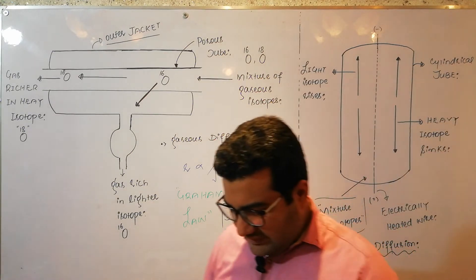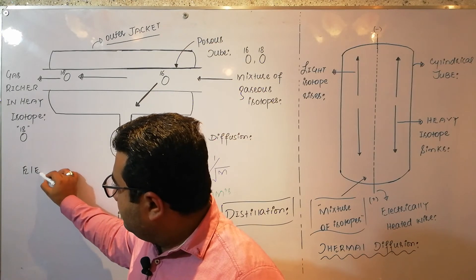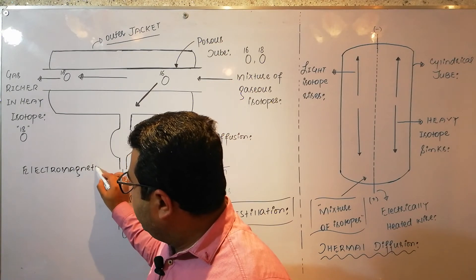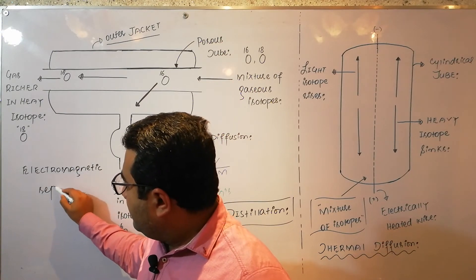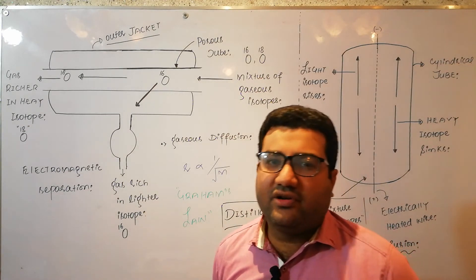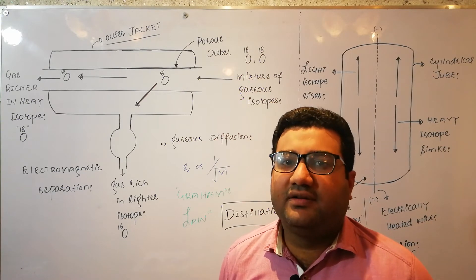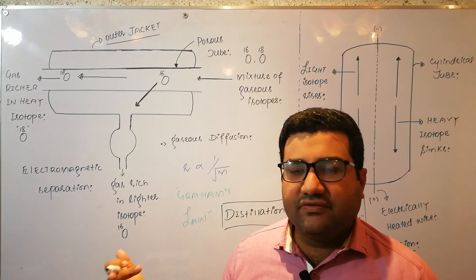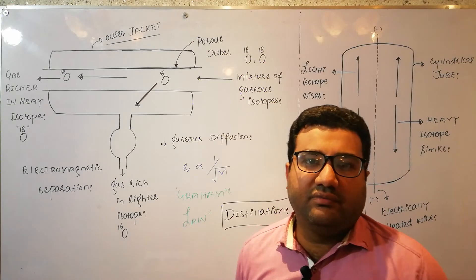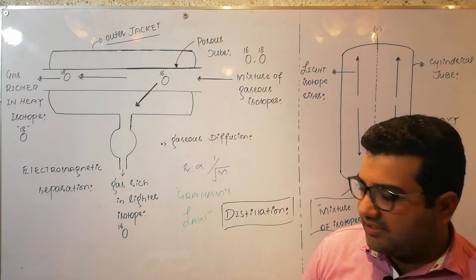Another method of separation is electromagnetic separation. I will not discuss this method in detail because I have already covered it. When we separated isotopes in the Dempster's mass spectrometer, we applied an electric field to accelerate the ions and a magnetic field to deflect the ions — that separation was essentially electromagnetic separation.